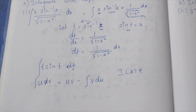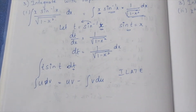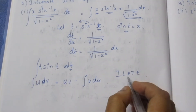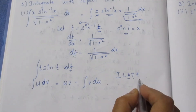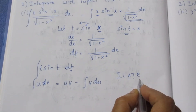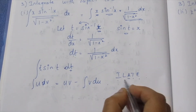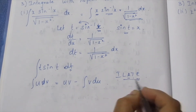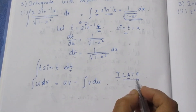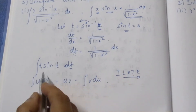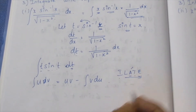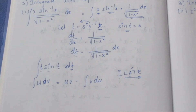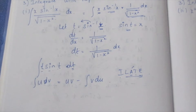I — inverse trigonometry. L — logarithmic. A — algebra. T — trigonometry. E — exponent. This is the ILATE order. Here, algebra is the polynomial and trigonometry follows. So U equals T (algebra) and dV equals sin T.